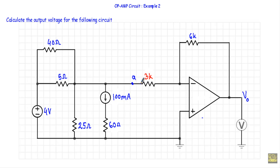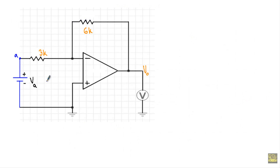We have a complex series-parallel circuit with a single voltage source and a single current source. If I denote this terminal as terminal A and the other as the ground terminal, and if I find the voltage difference between terminal A and ground — which I'll call VA — that will give us the same structure as an inverting amplifier, from which we can calculate the output voltage: Vout = minus RF divided by R1, multiplied by VA.